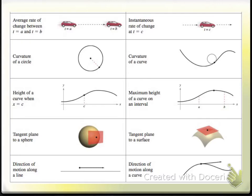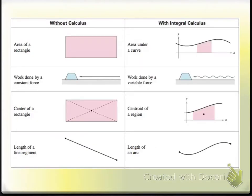With pre-calculus, you can find the direction of motion along a line; with calculus, you can do it along a curve. With pre-calculus, you can find the area of a rectangle. With calculus, you can actually find the area of an undefined object — the area under a curve — not just a rectangular form. Without calculus, you can find the work done by a constant force; with calculus, you can do it with a variable force, where it changes.